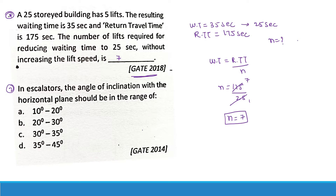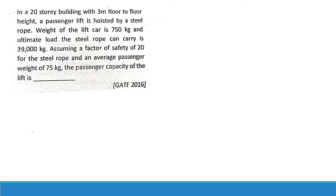In Gate 2014, for escalators, the angle of inclination with the horizontal should be in the range of 30 to 35 degrees. You should know this answer: 30–35 degrees.